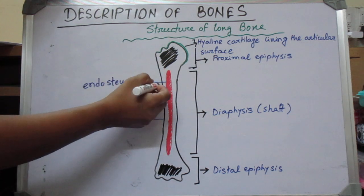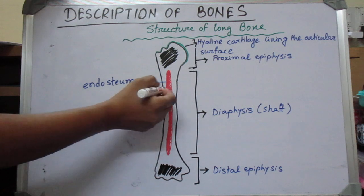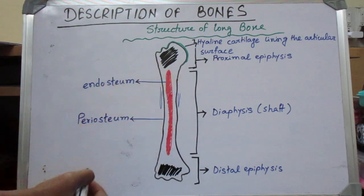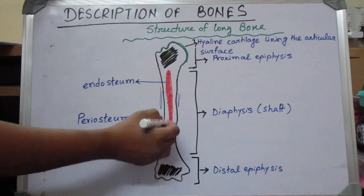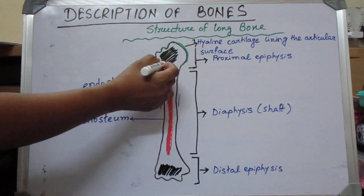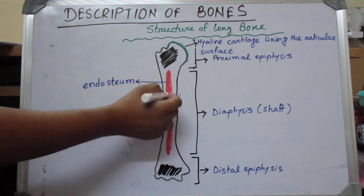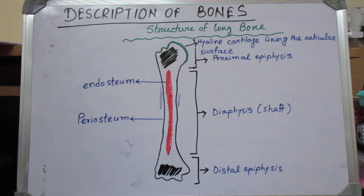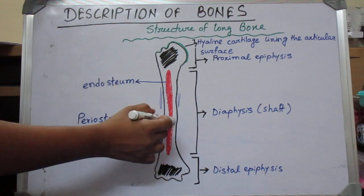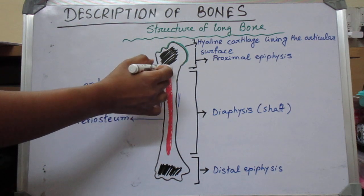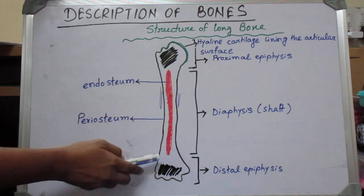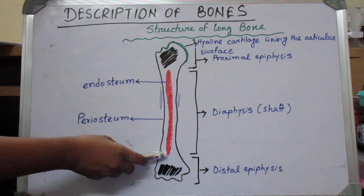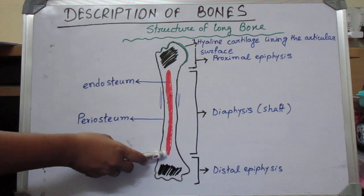The outer areas are compact bone. The medullary cavity is filled with red bone marrow in young individuals, and then it will be replaced with yellow bone marrow in older people.